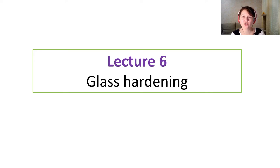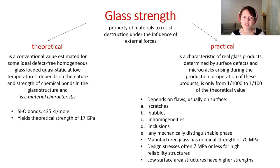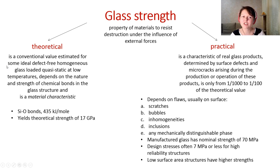Glass is brittle, and one of the main problems in glass forming is making it harder or tougher. That is why we talk about glass hardening. There are several important properties: first, glass strength — the ability of a material to resist destruction under external forces. We have theoretical and practical glass strength. Theoretical glass strength is a conventional value estimated for an ideal, defect-free, homogeneous glass loaded by a quasi-static force at low temperatures.